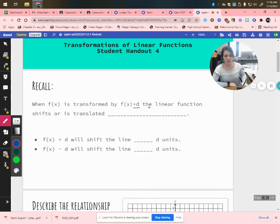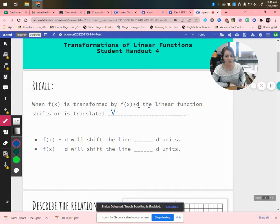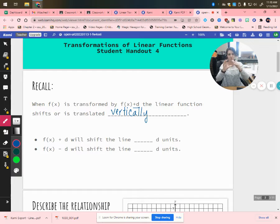So the main things that I want you to learn today is when you're adding outside or subtracting outside of the function notation, outside of the f(x), that that is a vertical translation. So it shifts or is translated vertically. So it's going to take that parent function, which passes through the origin, and it's going to shift it up or it's going to shift it down.